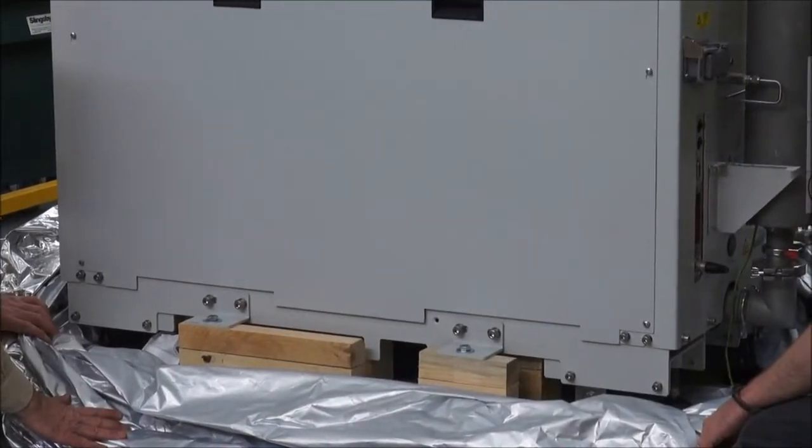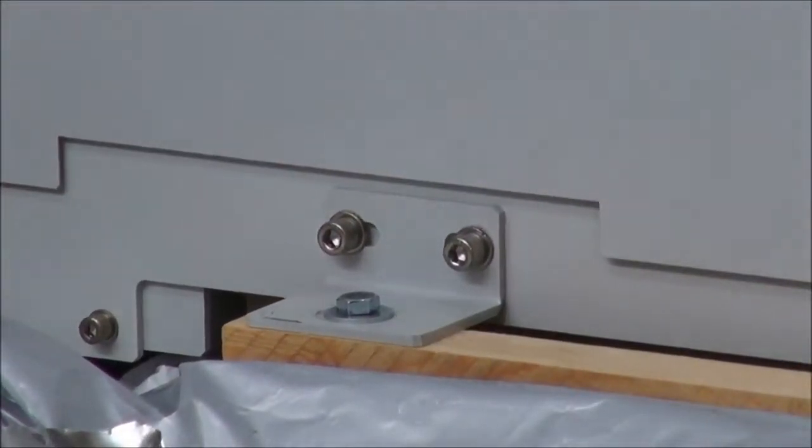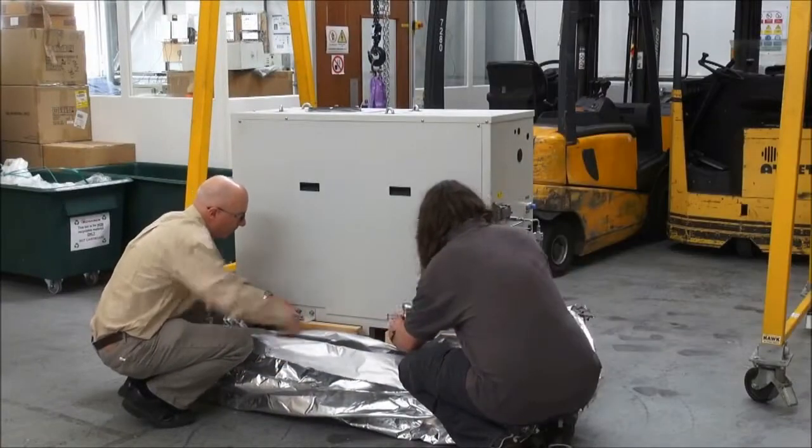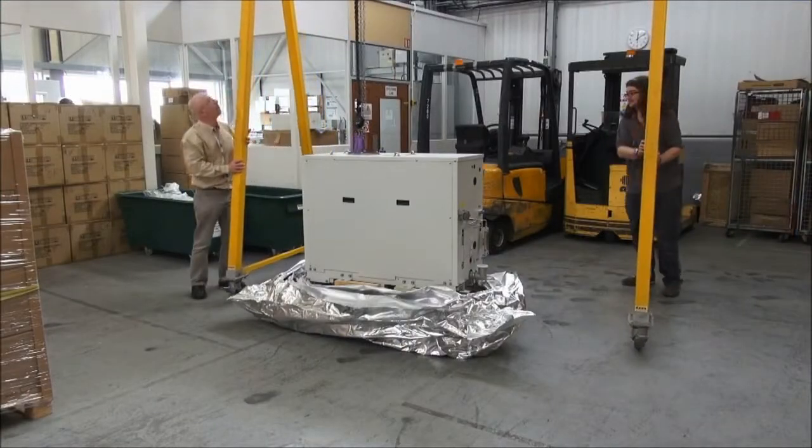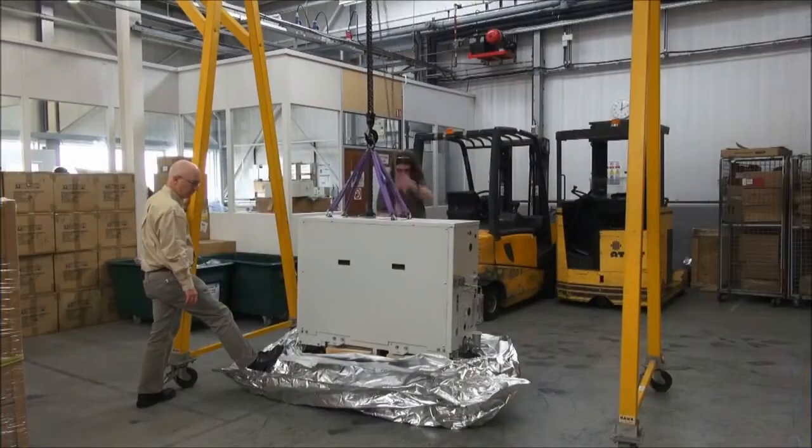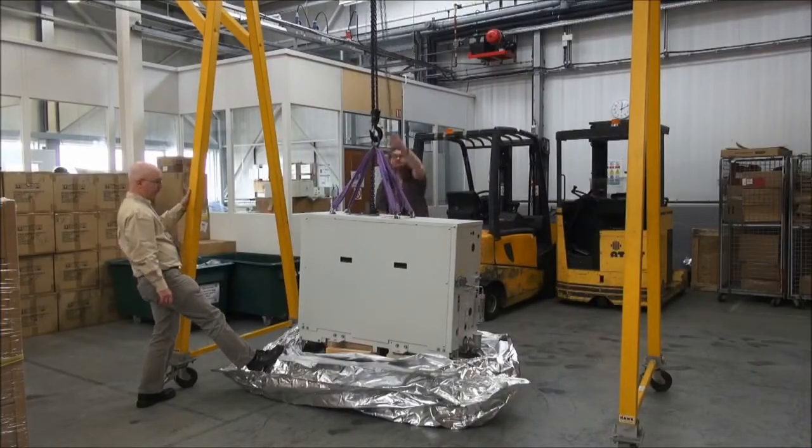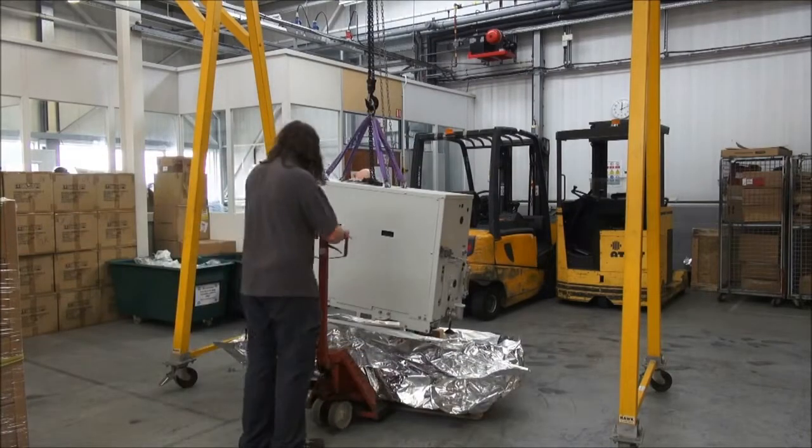The pump is held onto the base pallet with four large screws. Locate these and carefully remove them and keep them for any later use. Once the screws are removed, use suitable lifting gear to safely raise the pump clear of the base pallet and then move the pallet away.